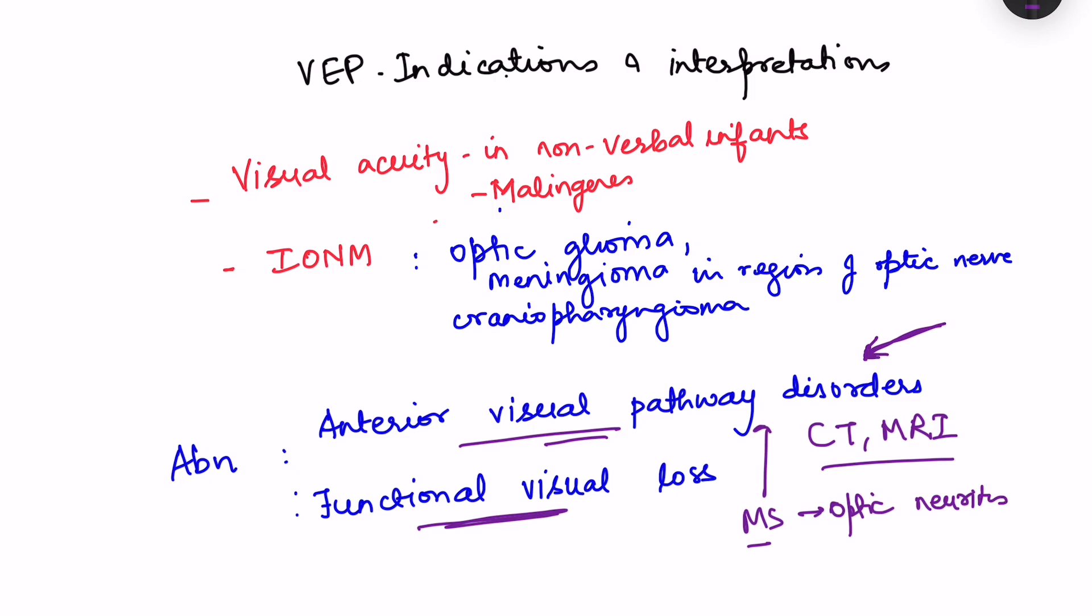It is also used to assess visual acuity in non-verbal infants and also in malingerers, because in malingerers, even if the person is saying that there is visual loss, VEP will be normal. Similarly, in non-verbal infants, we can analyze the intactness of the visual pathway by doing VEP. Then it is used for intraoperative neural monitoring, for example in case of surgeries of optic glioma, meningioma in region of optic nerve, craniopharyngeoma. This VEP can be monitored, and during the monitoring of VEP there should be no loss of the waves or increased latency of P100.